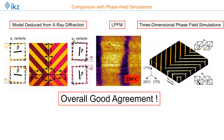We can compare this also with phase field simulations. In the three-dimensional phase field simulations, we also observe an orthorhombic phase with A1 and A2 unit cells, and we observe different stripe domain variants quite similar to those seen in the PFM image. There is overall good agreement between simulations and experimental data.